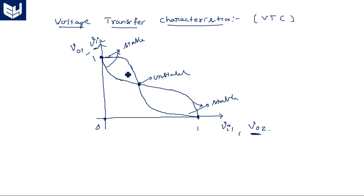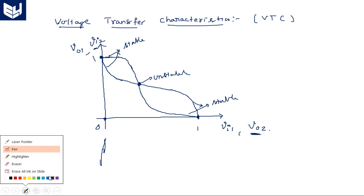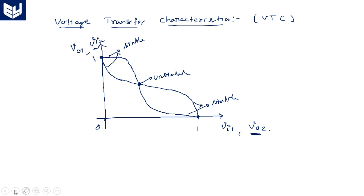In the bistable element, we have two stable states at the ends — either input is high or output is high. When we derive the energy curve from these VTC characteristics, the energy curve has its highest peak at the middle meeting point. There are three meeting points in total for the superimposed curves.